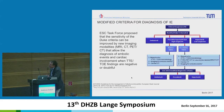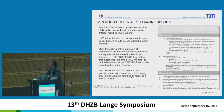The ESC guidelines taskforce proposed that the sensitivity of the Duke criteria can be improved by new imaging modalities — MRI, CT, PET scan or SPECT — that allow diagnosis of embolic events and cardiac involvement when echocardiographic findings are negative or doubtful. So the ESC taskforce created three additional points to the Duke criteria.